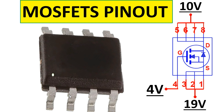So we have pin number one, two, three, four, five, six, seven, and eight. The reading goes counterclockwise. For every eight-pin MOSFET, the first three pins — pin number one, two, and three — are connected together and are the source. Pin number four is the gate.